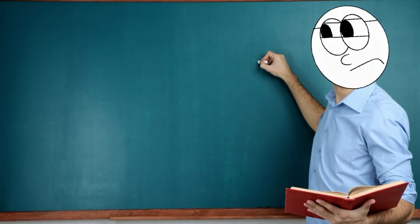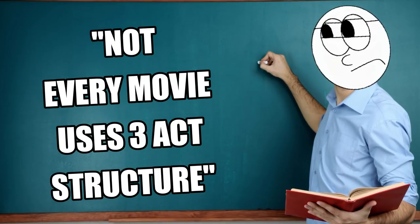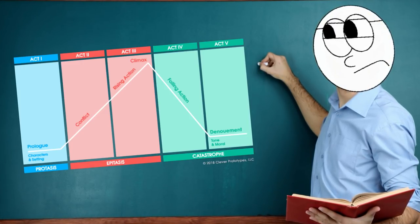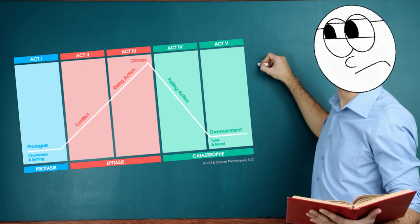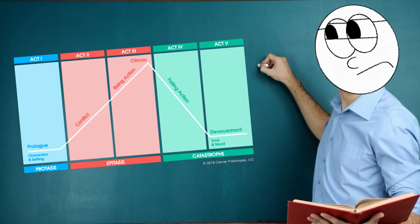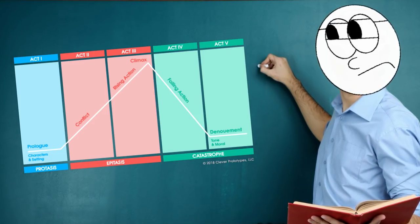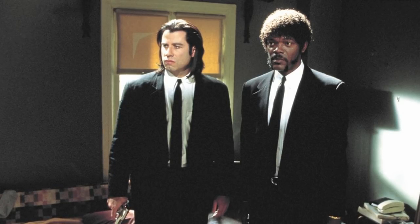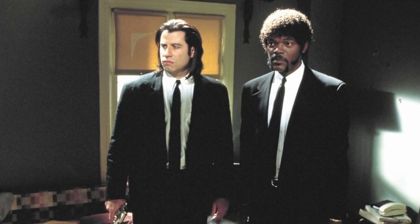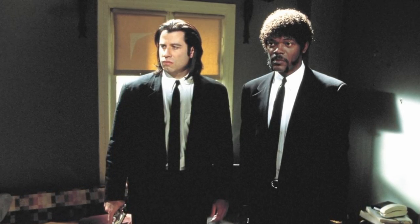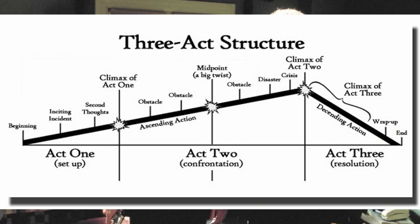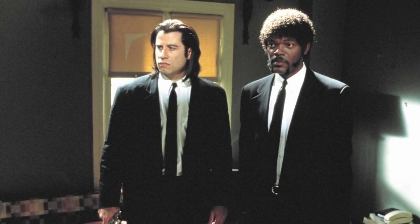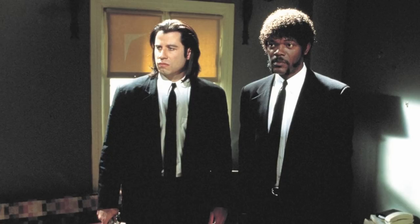And the second dumb thing being: not every movie uses 3-act structure. You've probably seen 5-act structure mentioned from time to time, although I'd argue it is to some extent just a rebranding of 3-act structure. Or you may have seen Pulp Fiction, which uses an episodic structure, even though each separate episode has a 3-act structure. So sure, not every movie utilizes 3-act structure.